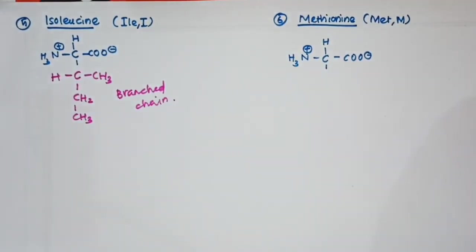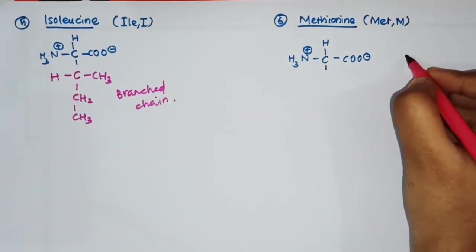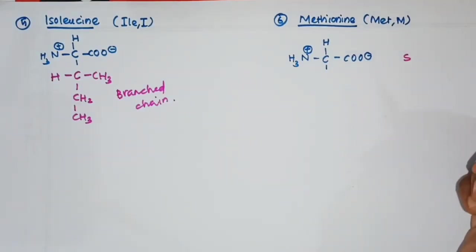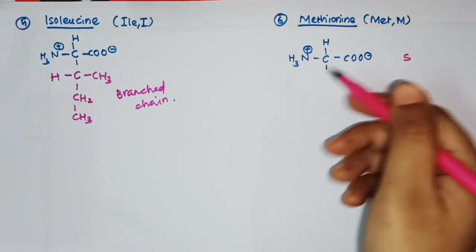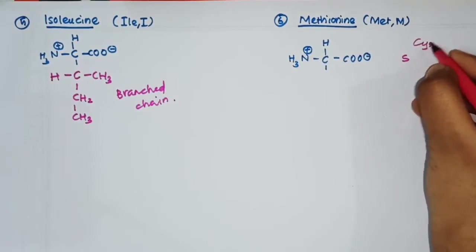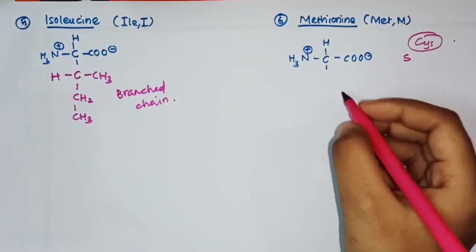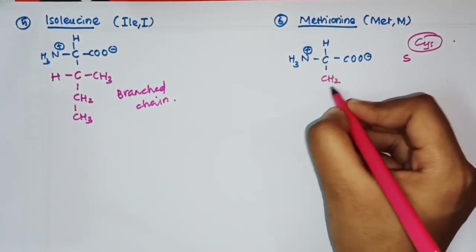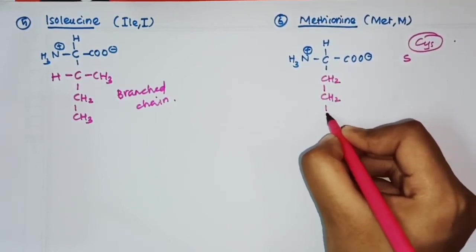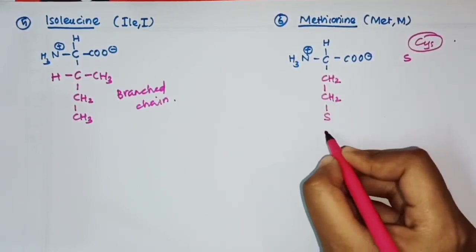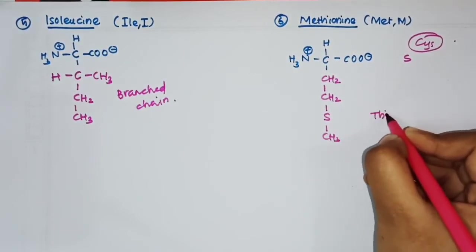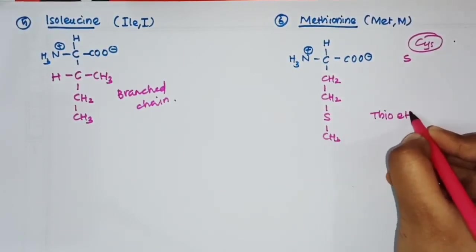In the case of methionine, it is a sulfur-containing amino acid. There are only two amino acids that contain sulfur: methionine and cysteine. The R group of methionine is –CH₂–CH₂–S–CH₃, and the functional group present is a thioether.